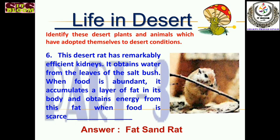The next desert animal is the fat sand rat. This desert rat has remarkably efficient kidneys. It obtains water from the leaves of the saltbush — a plant with fleshy leaves containing salty water. When food is abundant, it accumulates a layer of fat in its body and obtains energy from this fat when food is scarce. This is the fat sand rat.